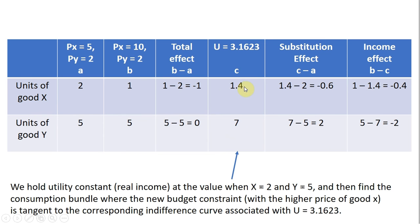The substitution effect is column C minus column A: minus 0.6 for good X and plus 2 for good Y. The income effect is column B minus column C: minus 0.4 for good X and minus 2 for good Y. I hope you found this video helpful.